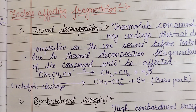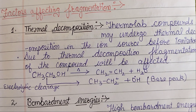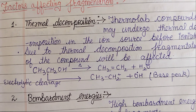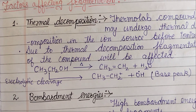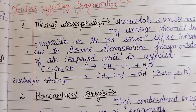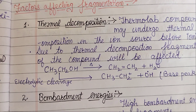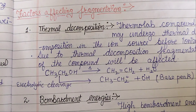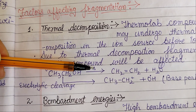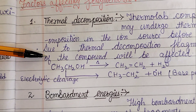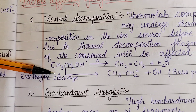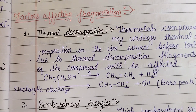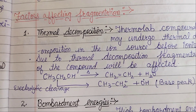There are many compounds which participate in thermal decomposition before ionization. Because of this thermal decomposition, the type of fragmentation is affected. For example, when thermal decomposition occurs it forms certain products, but unlike electrolytic cleavage, the fragment peaks that appear are not due to thermal decomposition. So thermally induced fragmentation is also a factor affecting fragmentation.